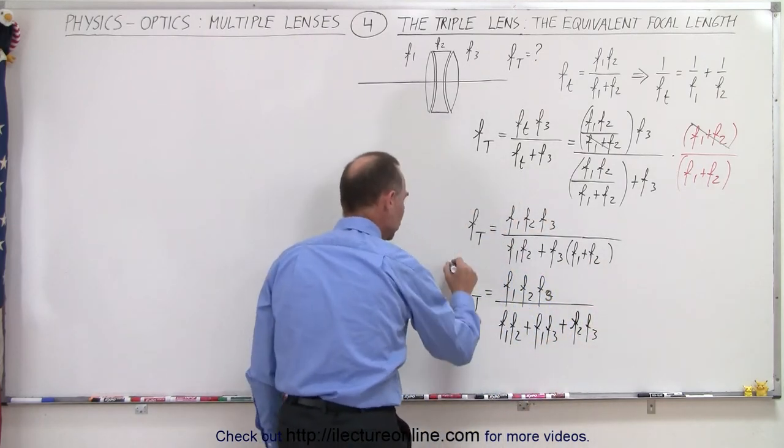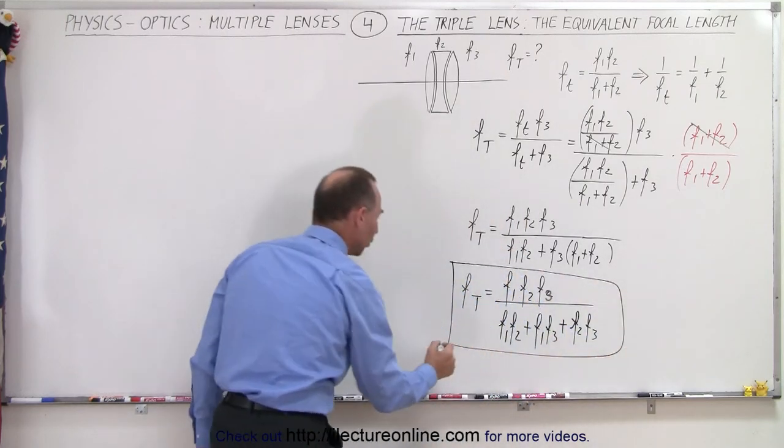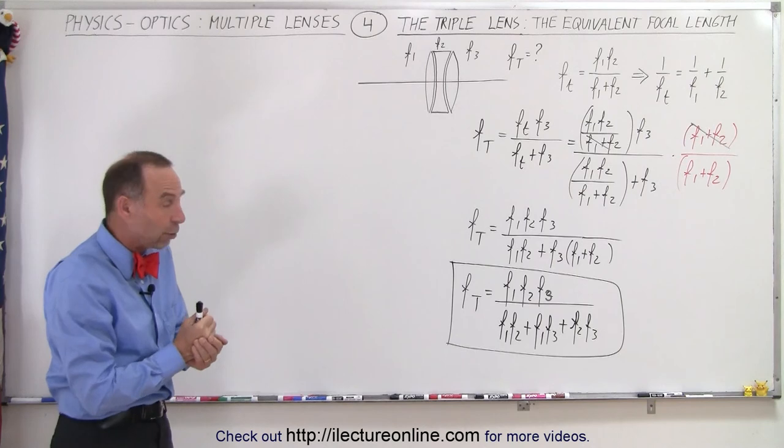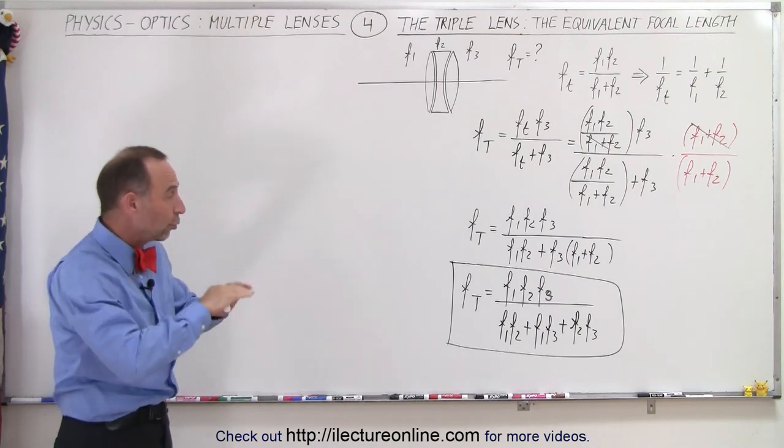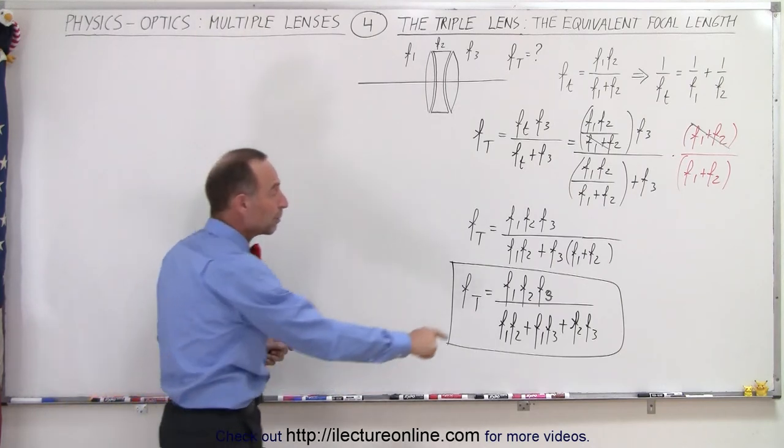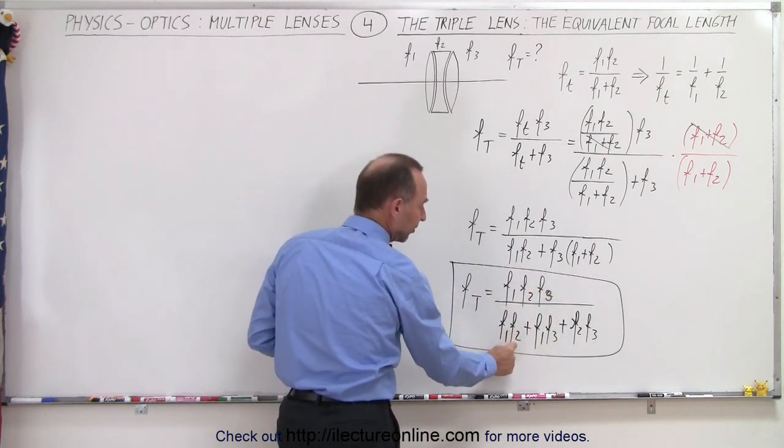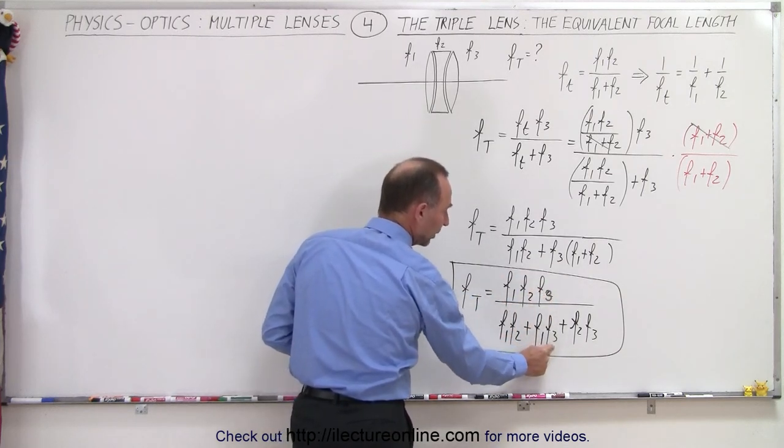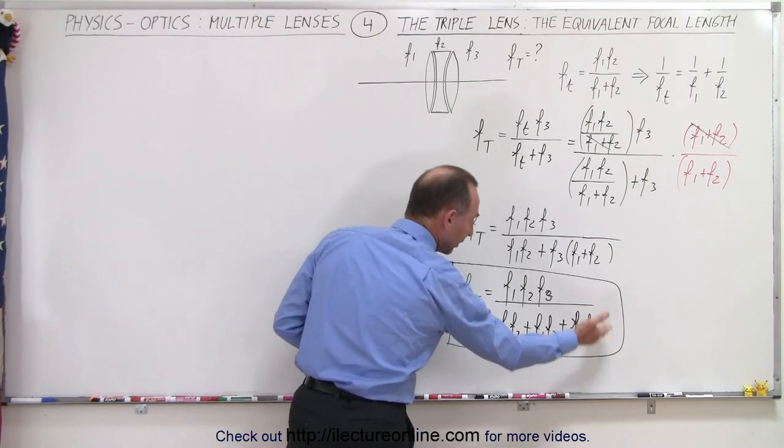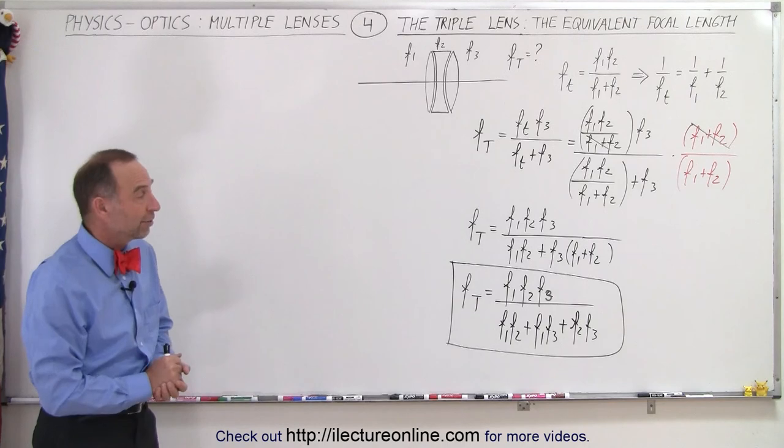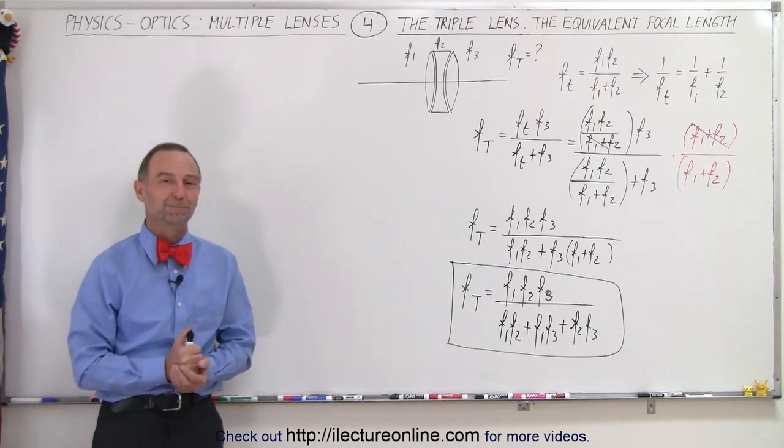And now we have a new equation that tells us what the focal length will be when we have three lenses put together all with three different focal lengths. The total or equivalent focal length will be the product of all three divided by the first one multiplied times the second one, the first multiplied by the third one, and the second one multiplied by the third one. And that together will give you the new focal length of all three lenses. That's how it's done.